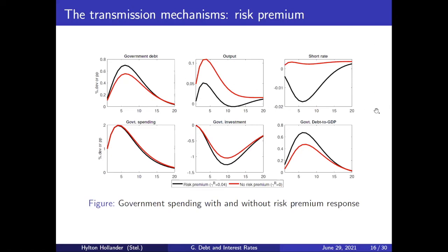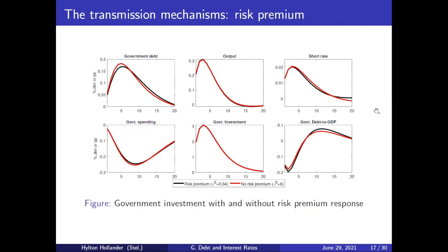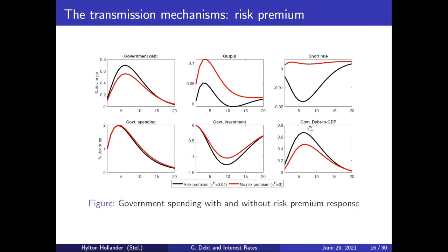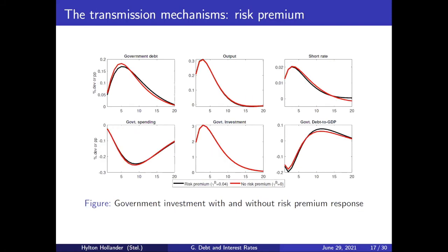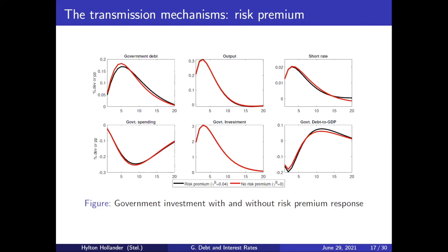For investment expenditure, we see a very minimal role for the risk premium. This is because government investment expenditure tends to reduce the debt-to-GDP ratio, and doesn't have as large an effect — about 0.1 to 0.2 percentage points — versus government consumption expenditure reaching up to 0.65 percentage points. So there's a much more significant influence of the risk premium on consumption expenditure as opposed to investment expenditure. I've got about seven to ten minutes remaining.